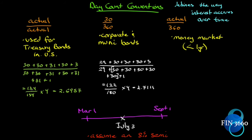For the Actual/360 money market convention, the actual number of days was 124, and the denominator is 360. You multiply by the coupon amount to get the accrued interest. So those are our three day count conventions.